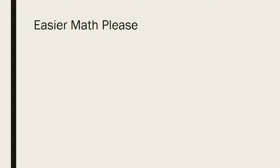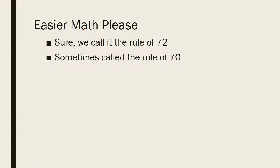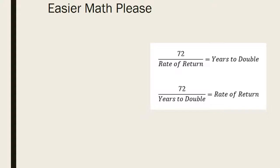You might be saying the math was so hard with all those formulas — well, you need to learn it anyway — but if you want easier math, let's do the rule of 72. Sometimes it's referred to as the rule of 70 as well, because this is an approximation, not exact, but it gets you to an answer that's quite close. The rule of 72 is: 72 divided by the rate of return tells you the number of years it will take for your money to double. Or rearranged: 72 divided by the number of years you want something to double gives you the required rate of return.